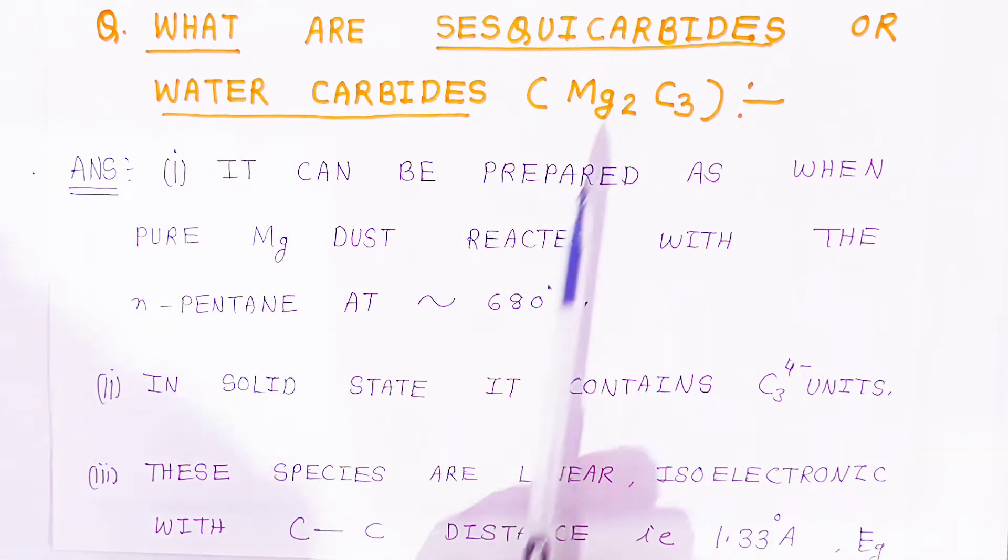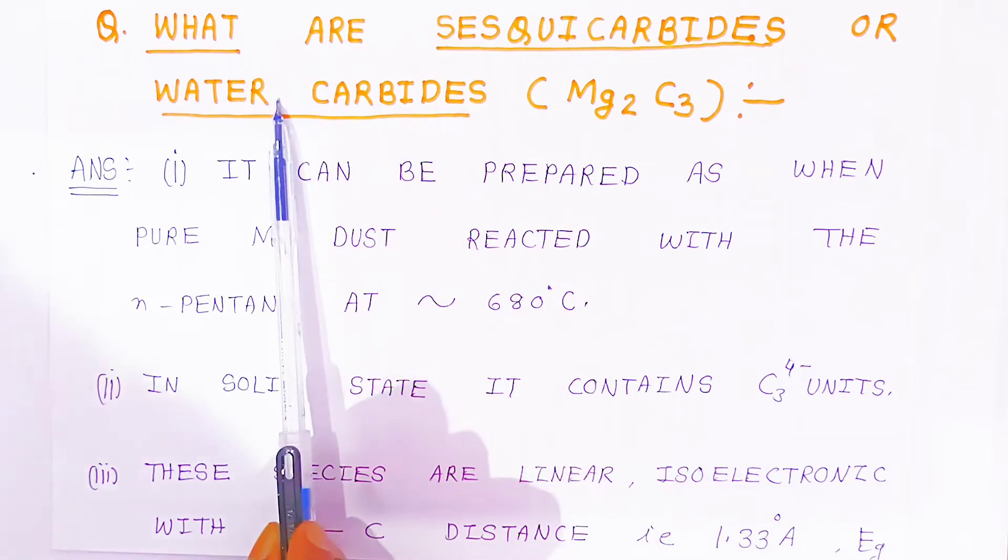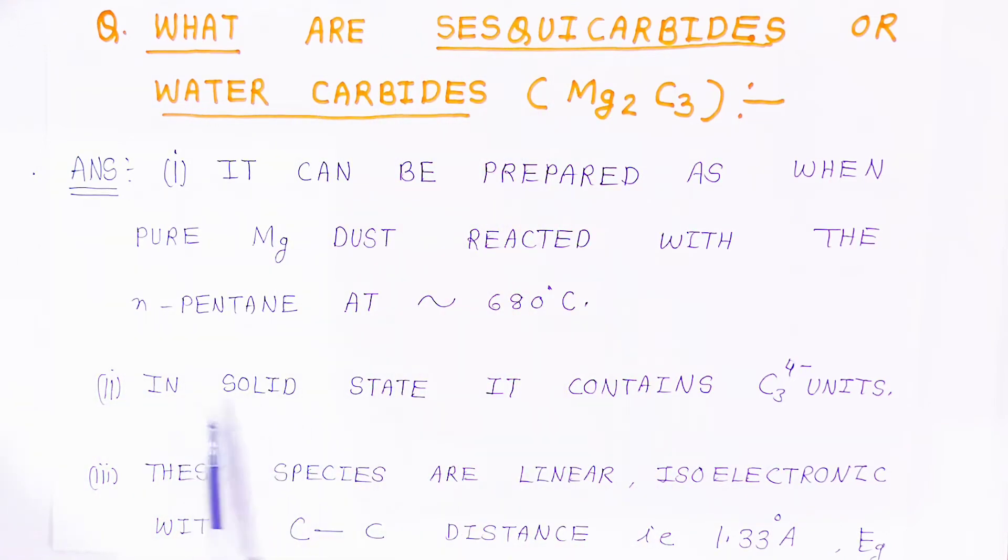Understanding water carbides. This magnesium carbide is also called water carbides. In solid state it contains C4- units. These species are linear, isoelectronic with carbon-carbon distance of 1.33 Angstrom.